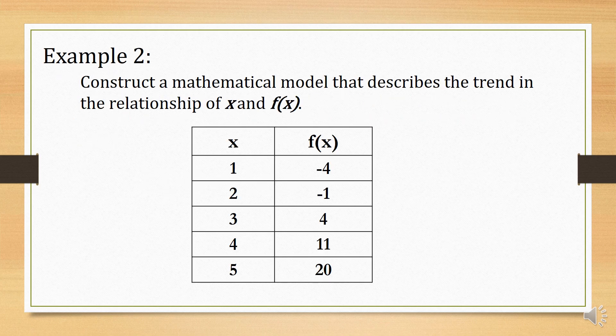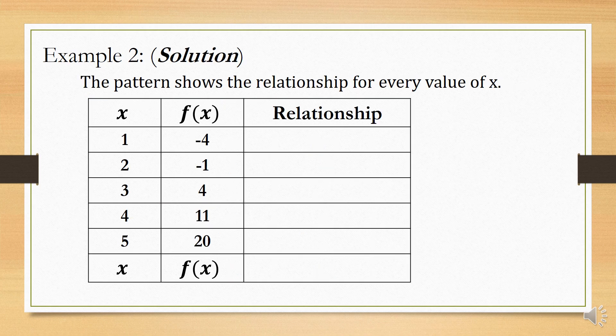Example number 2. Construct a mathematical model that describes the trend in the relationship of x and f. Observe this given table of values — we have values of x and values of f. Now, what are the relationships between x and f? We're going to find a pattern that will show the relationship between x and f.